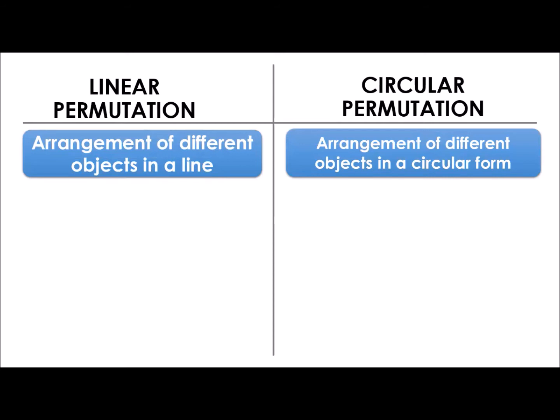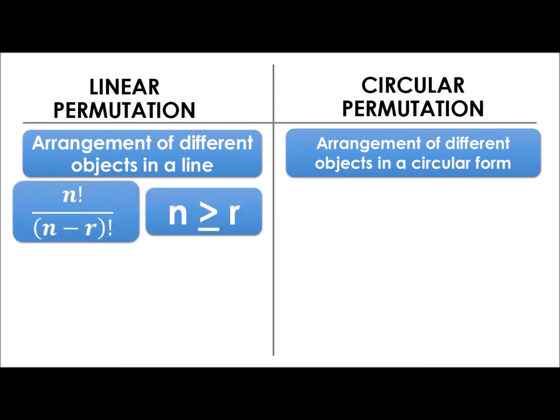Ang linear, nagpoform ng straight line. Ang circular, paikot, pabilog in circular form. The formula under the linear permutation is n factorial all over the quantity n minus r factorial, wherein the value of n should always be greater than or equal to r. And the circular permutation formula is the quantity of n minus 1 factorial.